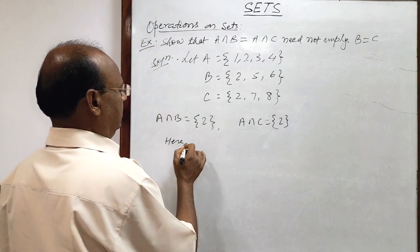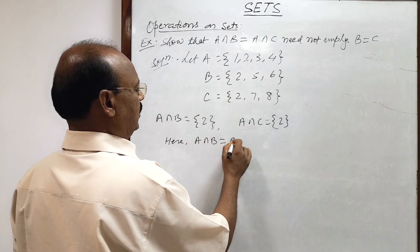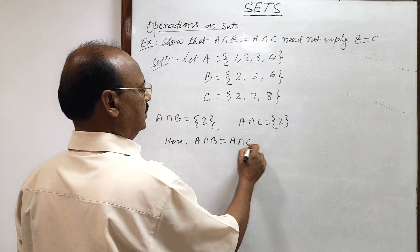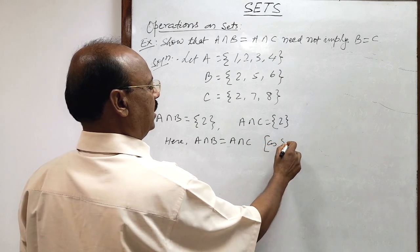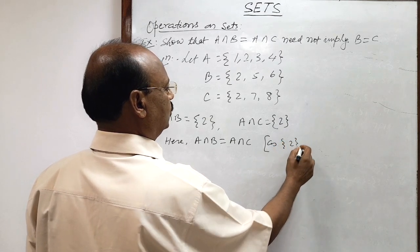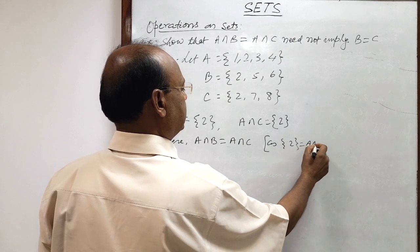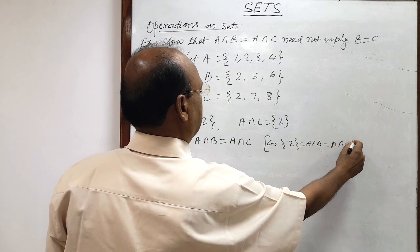Here we find that A intersection B is equal to A intersection C because both are 2. This is A intersection B and this is A intersection C.